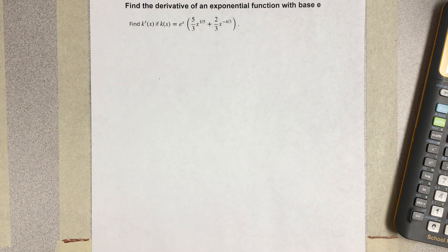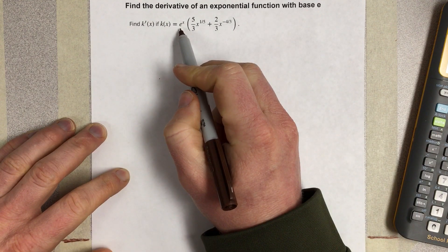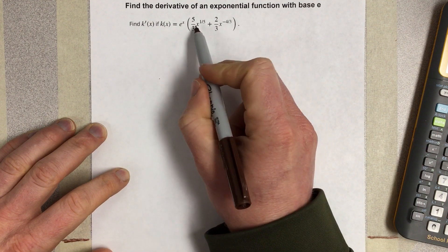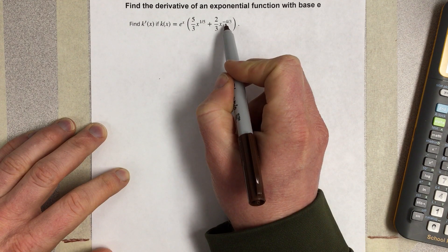In this video, we're going to find the derivative of an exponential function with base e. It says find k prime of x if k of x is equal to e to the x times five thirds x to the one fifth plus two thirds x to the negative four thirds.